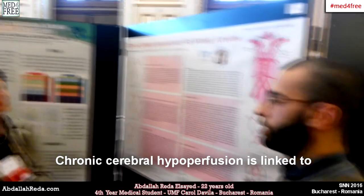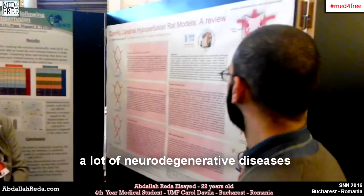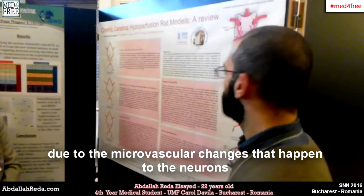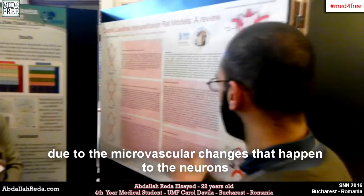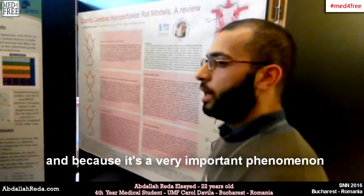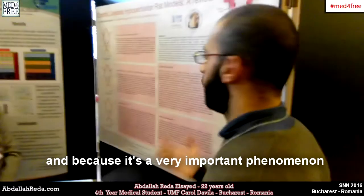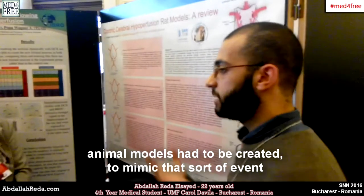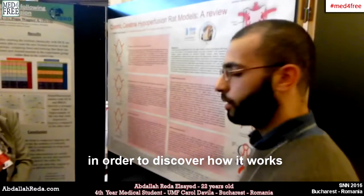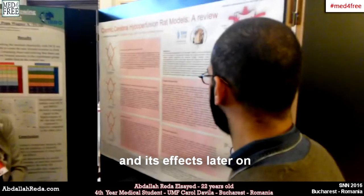Chronic cerebral hyperperfusion is linked to many different diseases due to the microvascular changes that happen to the neurons. Because it's a very important phenomenon, rat models had to be created in order to mimic that sort of event and discover how it works and its effects.